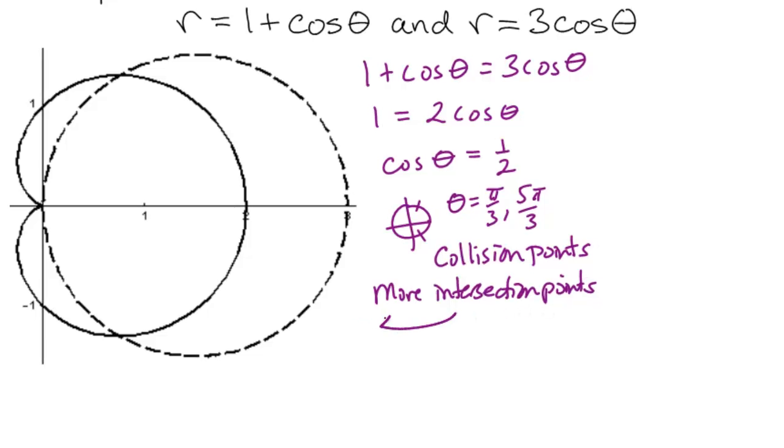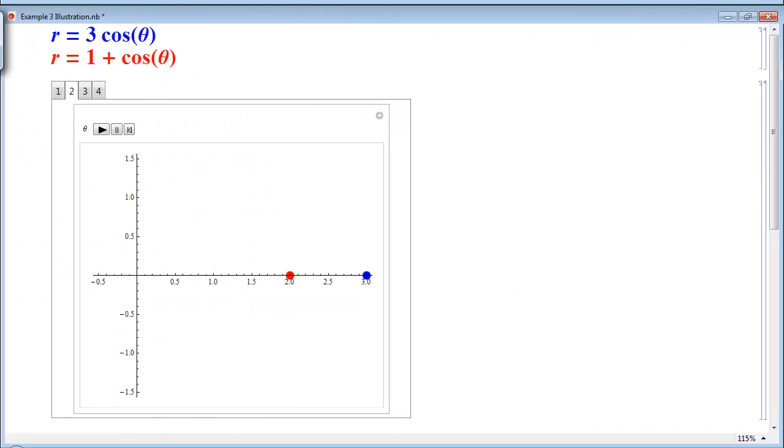We can find those by looking at the graph. Here I have an animation with both curves. As they go around, we can see that the points collide when the angle is pi over 3, and then again when we have an angle of 5 pi over 3. Here's the first collision point. Now, there's also an intersection point. They intersect at the origin. However, that's not a collision point, because each point gets to the origin for a different value of theta.